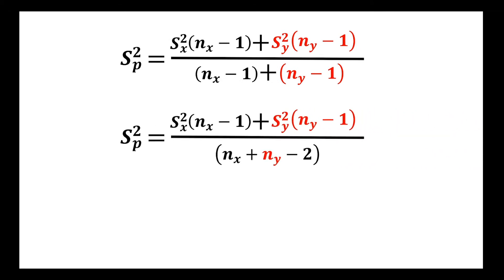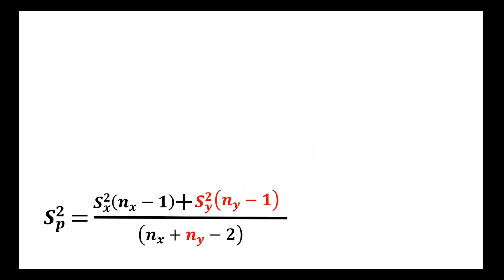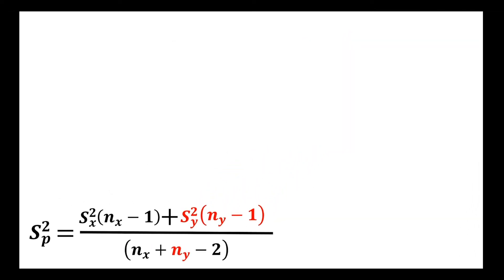We can simplify that just a little bit, but apart from that we're ready to go. Here we have the standardization formula for the difference between two means when we have the pooled variance. This would also be the test statistic that we calculate for any hypothesis test that we do.